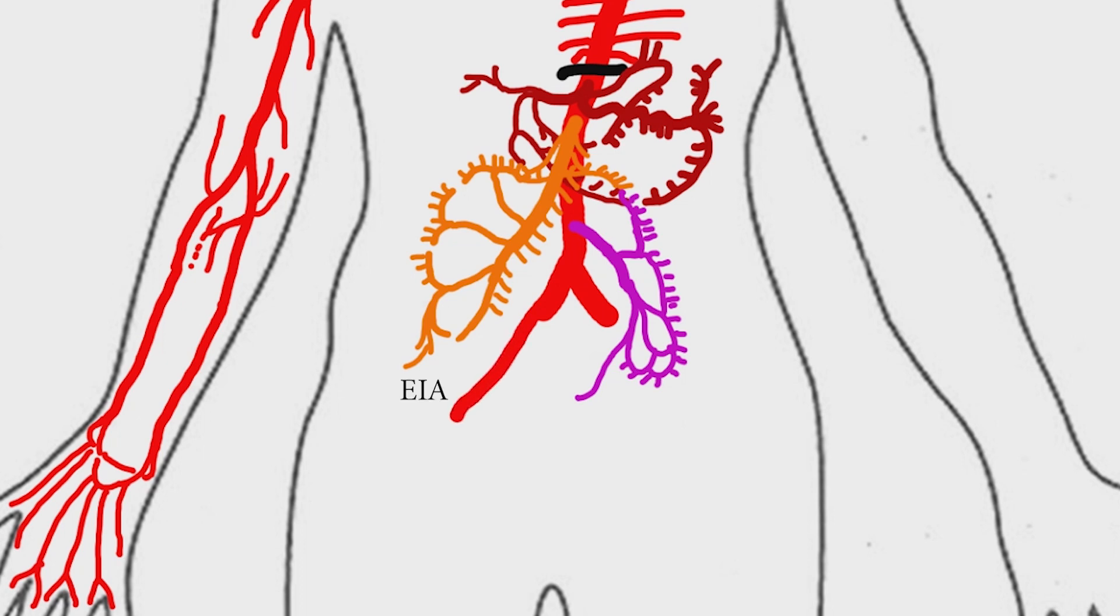The common iliac artery divides into external and internal iliac arteries. The external iliac artery passes beneath the inguinal ligament and becomes the common femoral artery. The external iliac artery gives rise to inferior epigastric and deep circumflex iliac arteries. These vessels supply blood to the muscles and skin in the lower abdominal wall.